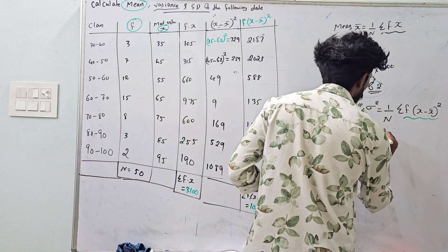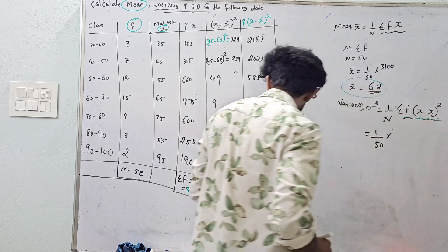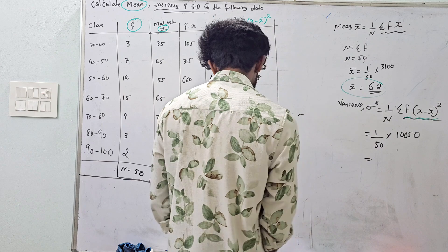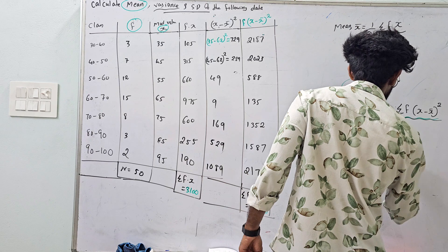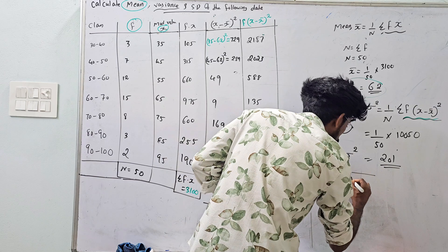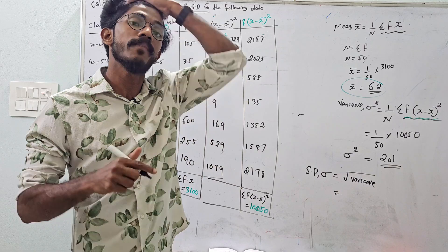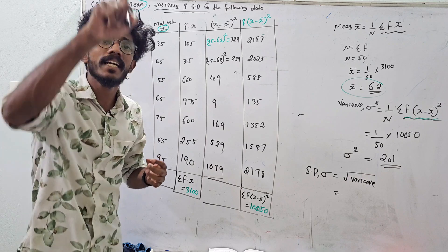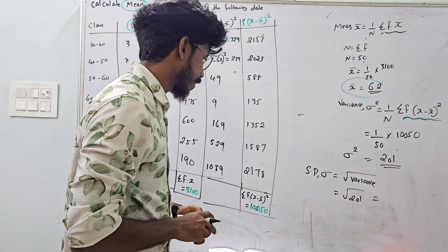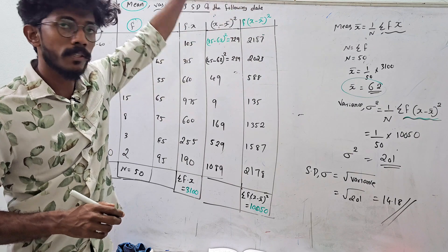So variance equals 1 by n into the sum. That is 1 by 50 into this sum of f·(x − x̄)², which gives 1880. So variance sigma squared equals 1880 divided by 50. Standard deviation sigma is nothing but the root of variance. Root of 1880 by 50 gives approximately 14.18. So the mean, variance, and standard deviation are now calculated.